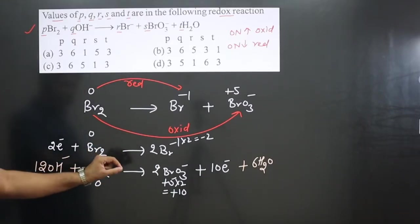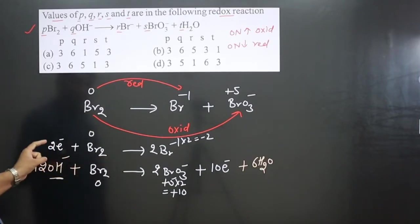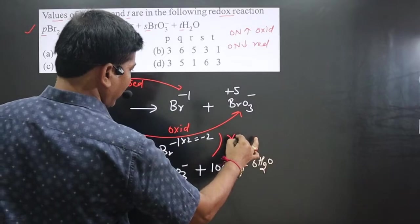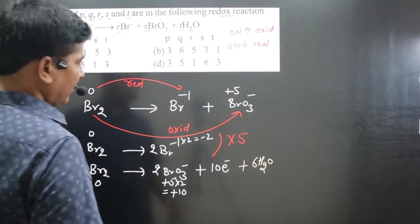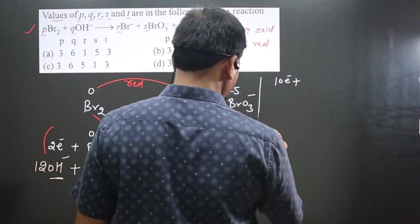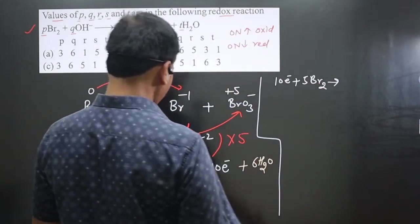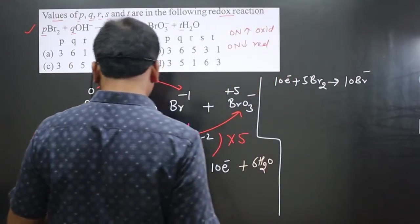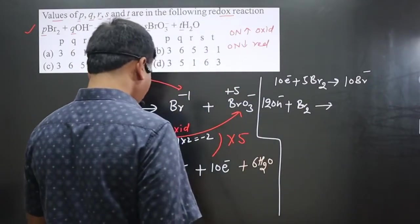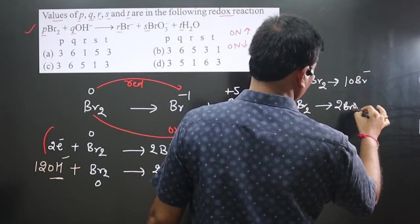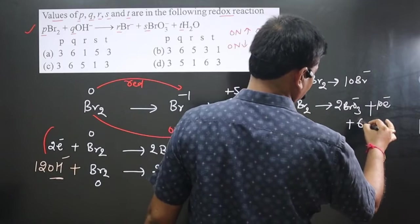Now we can add both half-equations, but first we need to balance the number of electrons. The second half-equation has 10 electrons; the first has only 2 electrons. So I multiply the first half-equation by 5, giving 10 electrons on both sides. First equation (×5): 10e⁻ + 5Br₂ → 10Br⁻. Second equation: 12OH⁻ + Br₂ → 2BrO₃⁻ + 10e⁻ + 6H₂O. Now we can add both.